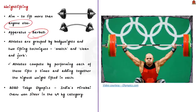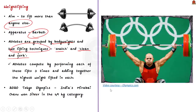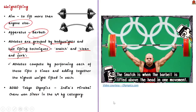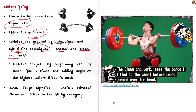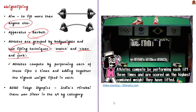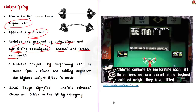In weightlifting competition, athletes are grouped by body weight and compete based on two lifting techniques: the snatch and the clean and jerk. In the snatch, the bar is lifted from the floor to above the head in one continuous movement. In clean and jerk, it is a two-stage action — first the bar is brought to the chest, then jerked overhead. Athletes perform each lift three times; the highest weight from each technique is added together.